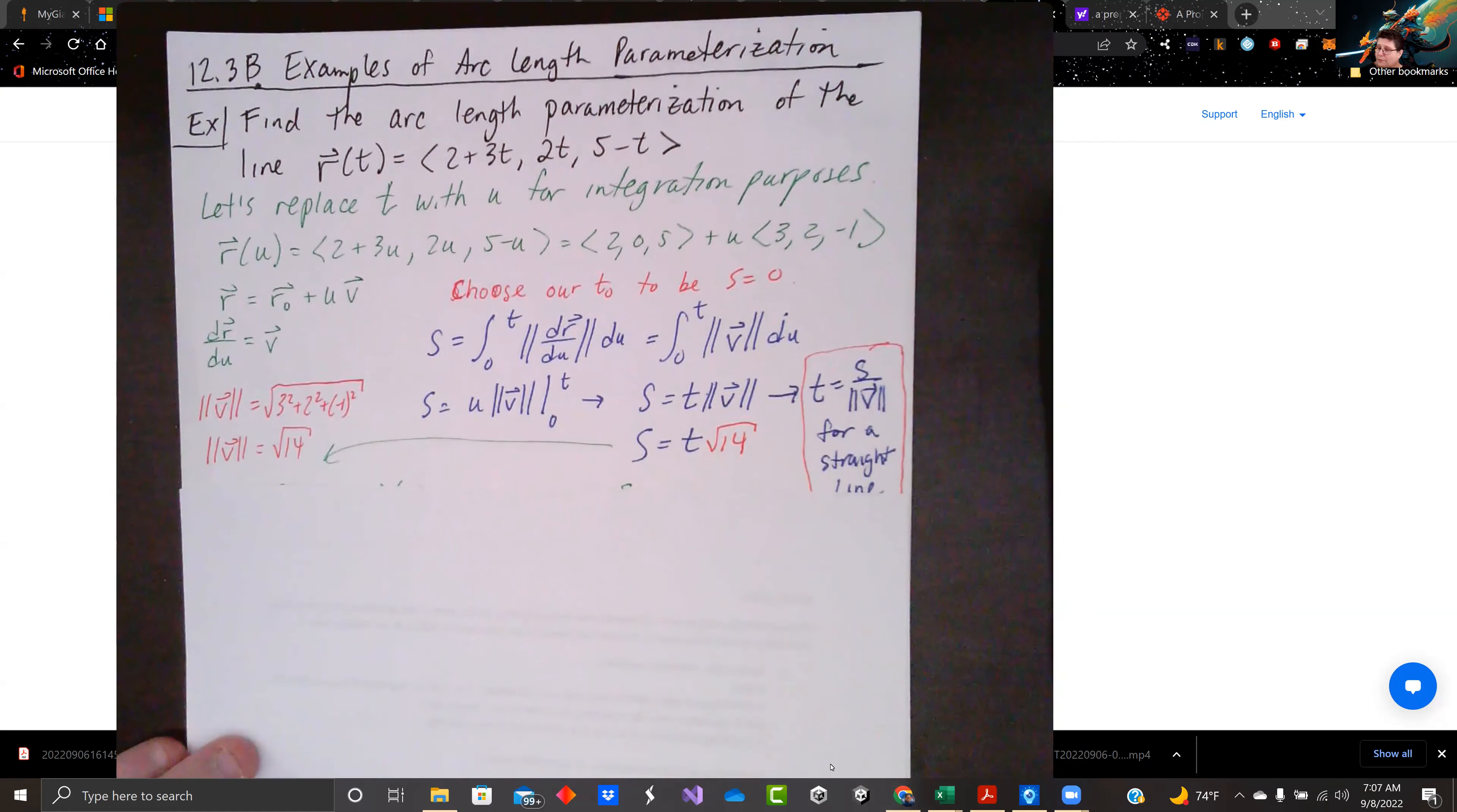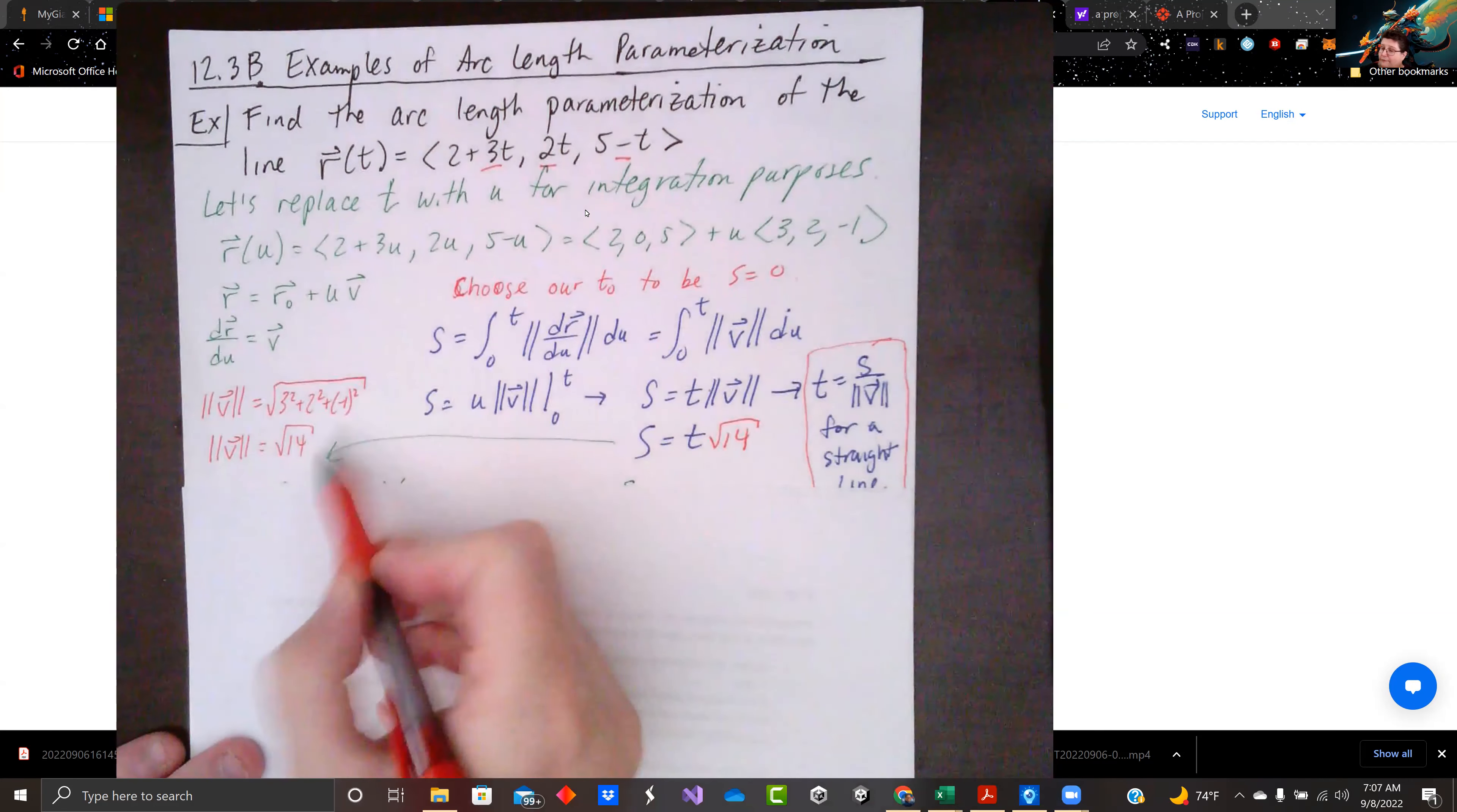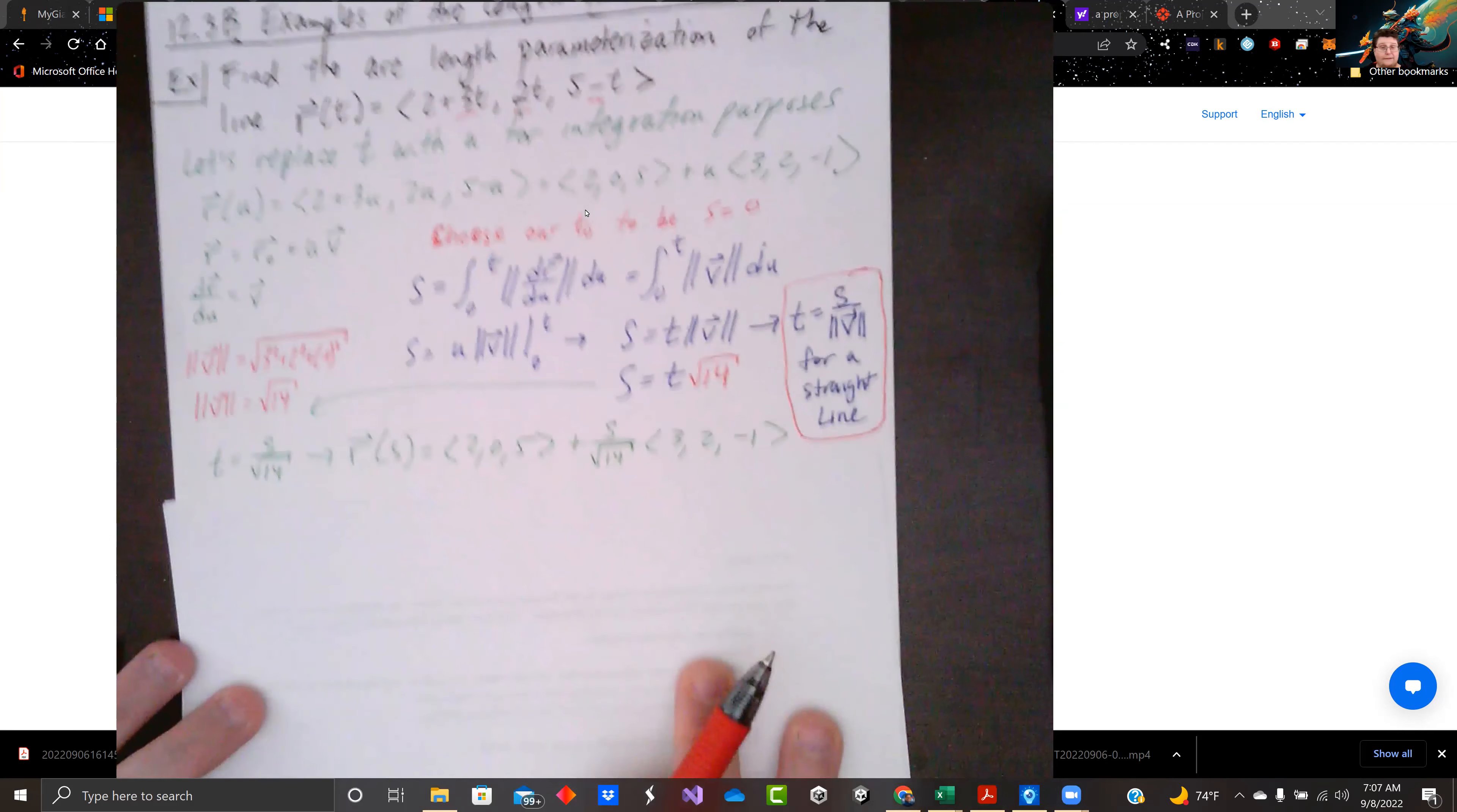So what we're doing, we find the magnitude of the vector there. We're taking 3, 2, right there. 3, 2, and negative 1. We're doing the magnitude of that. Bam, we get square root of 14. So s equals t times the square root of 14. t equals s over the square root of 14. Just like we were saying over here, t is s over the magnitude of the vector.